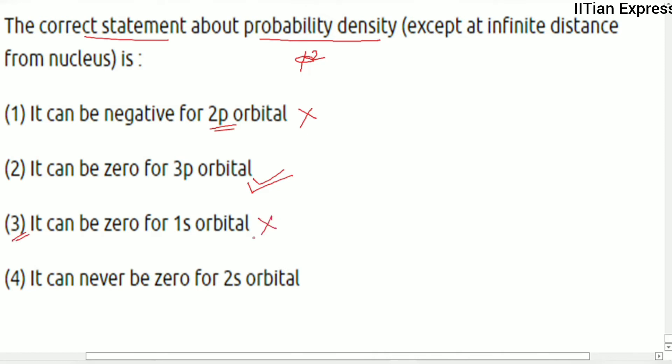1s orbital - this is wrong. Option 4: It can never be zero for 2s orbital - this is also wrong.